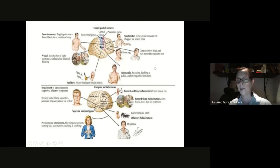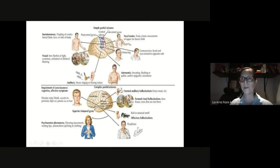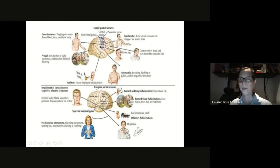For focal seizures, the first symptom depends on what area of the brain it starts in. If it starts in the frontal cortex, you'll have focal motor, grimacing, versive or controversive movements. If it's the hippocampus, you can start having autonomic symptoms. If it's lateral temporal, you can have auditory symptoms. If it's occipital, you'll have visual symptoms, and of course somatosensory symptoms from the sensory area.